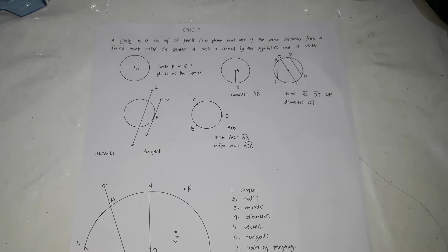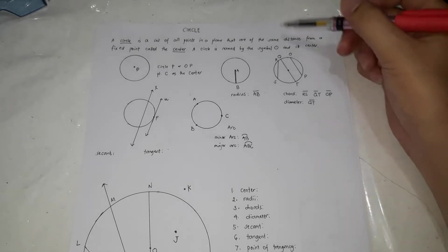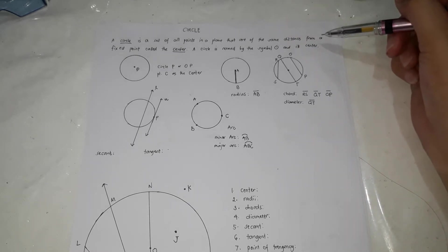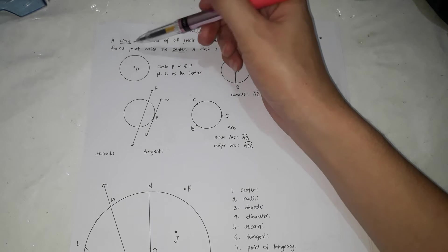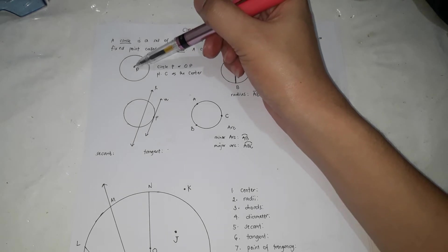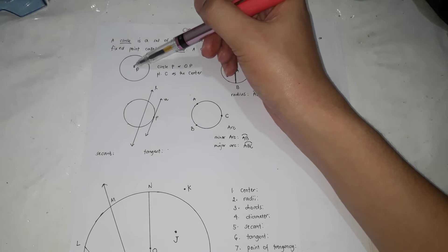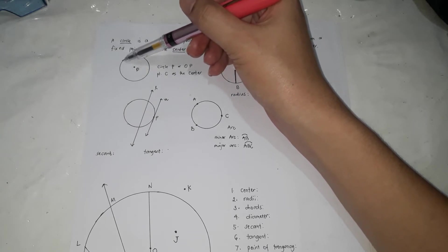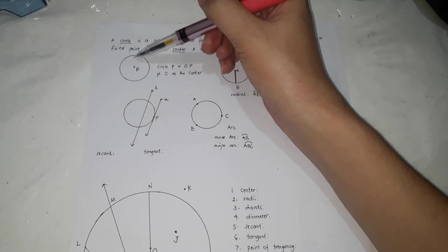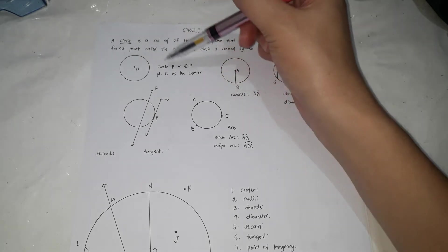A circle is named by the symbol - a circle with a point in the middle and its center. For example, this is a circle. If this is a fixed point, all of these points here in the circle are equidistant or have the same distance towards point P. So all of these points are the same distance from point P. So this circle is called circle P.